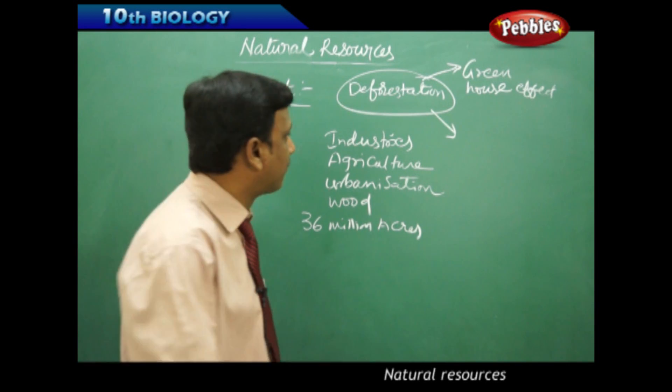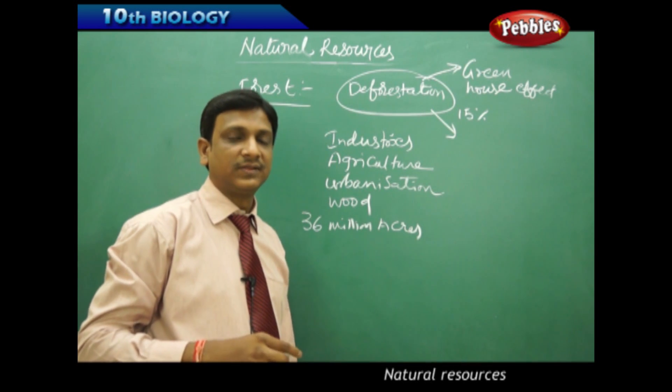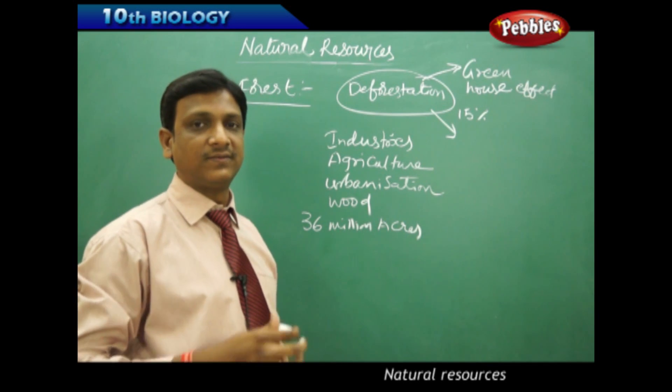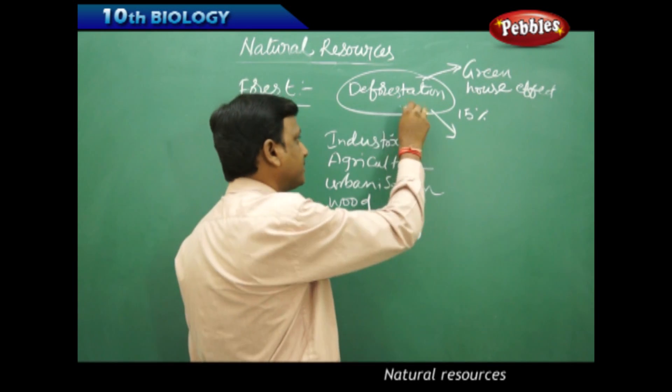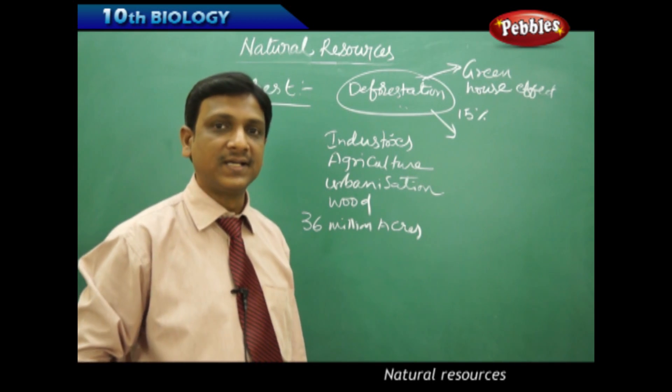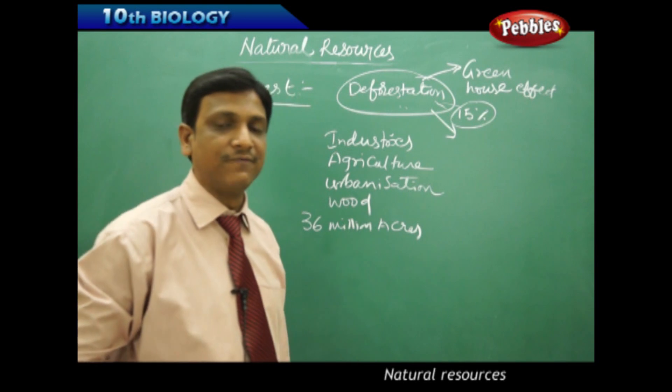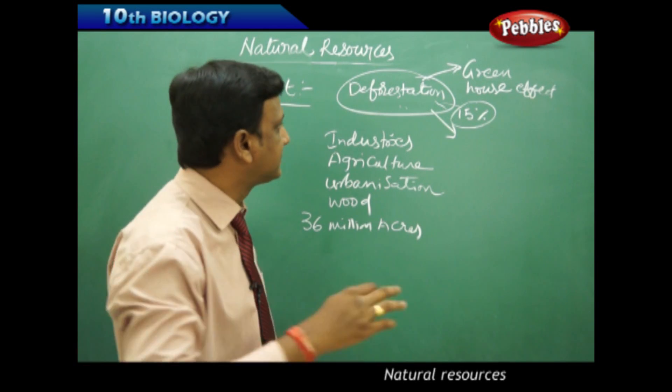So the deforestation itself contributes 15 percent. 15 percent of the credit for this greenhouse effect goes to deforestation. The greenhouse effect may be caused because of so many reasons. Out of those reasons, 15 percent credit is taken by this deforestation.